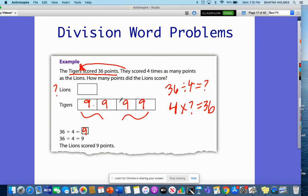So 36 divided by 4 is 9. That means that how this bar model works is that this has to be 9. The Lions had to have scored 9 points in order for the Tigers to have scored 36. Because four sets of 9 will get me 36.